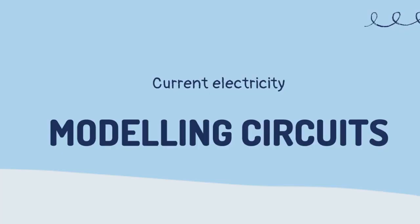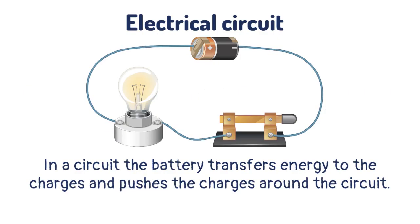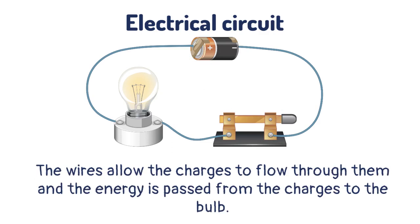Modeling circuits. Metals are conductors — they allow a charge to pass through them easily. This makes them the ideal material to make wires from. In a circuit, the battery transfers energy to the charges and pushes the charges around the circuit. The wires allow the charges to flow through them, and the energy is passed from the charges to the bulb.